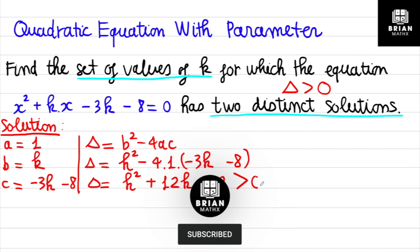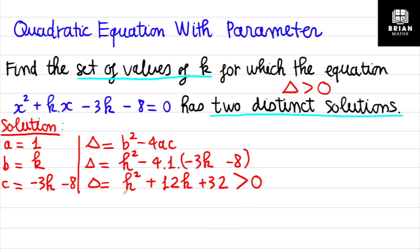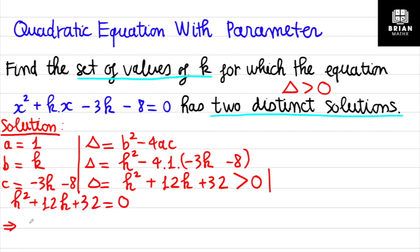So the quadratic inequality is k² + 12k + 32 > 0. This is no longer the original equation — it is now a quadratic inequality. To solve it, first find the roots of k² + 12k + 32 = 0. Solving gives k = −4 and k = −8.